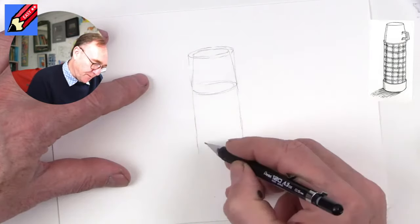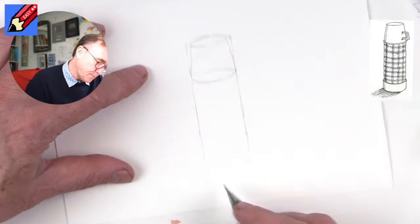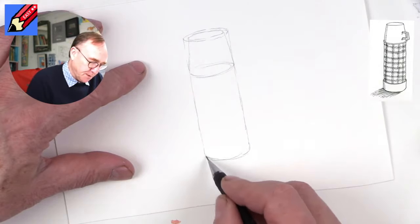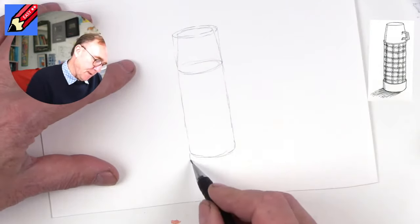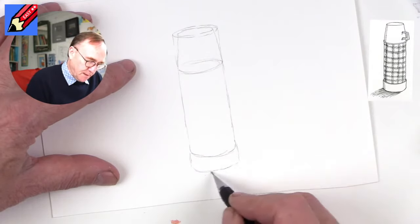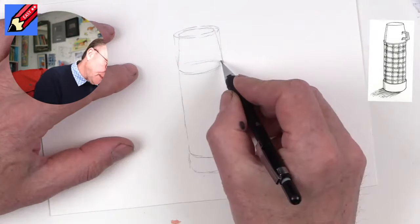This is the body of the vacuum flask down here, and then that will be connected at the bottom with a curve. Then you get this kind of plastic bit on the bottom as well, like that.